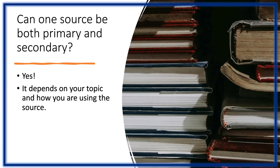Can one source fall into different categories? The answer is yes, and it depends on your topic and how you use the source. For example, normally you would not use a textbook as a primary source, but if you were researching education in the United States in the 1950s, a textbook from the 50s could be used as a primary source, showing what students at the time were learning and what was considered valuable in the education system.